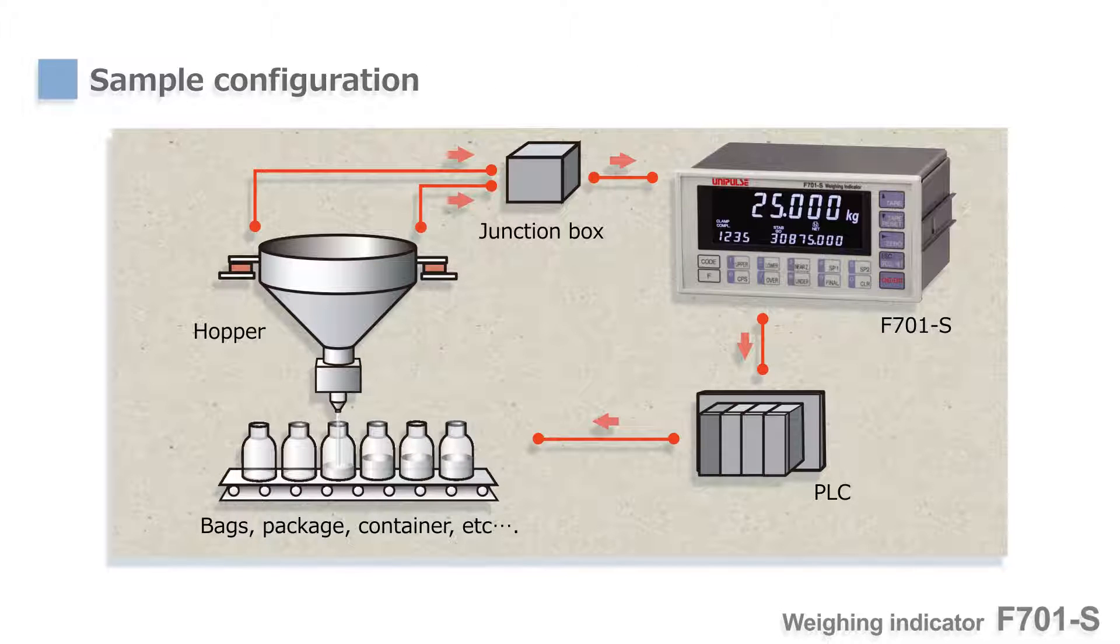Next we will show a sample system configuration. This is the most popular and simple sample system configuration with F701S. The instrument processes the input signal from sensor and then sends out control signals to PLC or relay circuits. So the F701S functions as the main control unit in a weighing system.